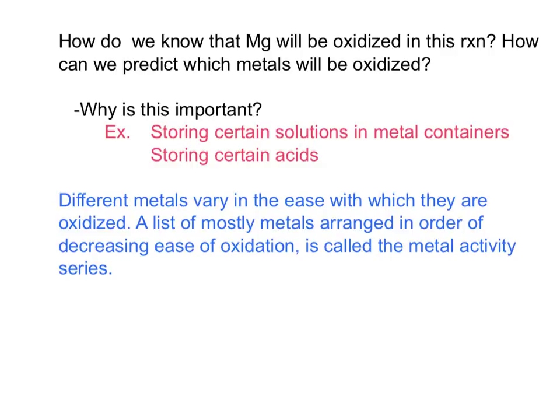How do we know that magnesium will be oxidized in this reaction, and how can we predict which metals will be oxidized in the future? I'm telling you that magnesium was oxidized by giving you this reaction, and we did it in laboratories, so we saw it happen with our own eyes. But how would I predict it before it was done? And secondly, why is this important? This comes into play when it comes to storing certain materials. When we store certain solutions, we have to make sure that the metal container won't react with that solution. For example, I couldn't store the copper chloride solution that we use in the laboratory in a magnesium container, because it would eat through the magnesium container. And I couldn't store certain acids in different containers, because acids can eat through those containers if we don't know how things react together.